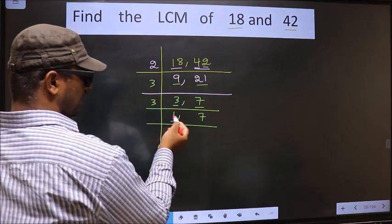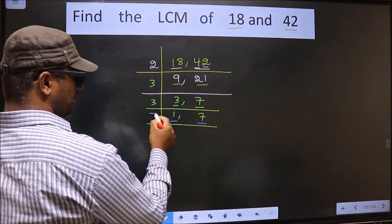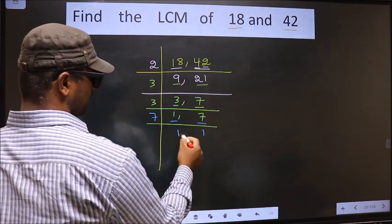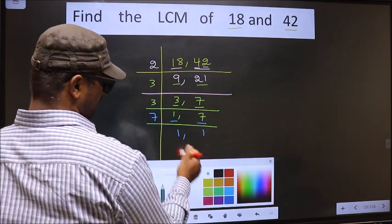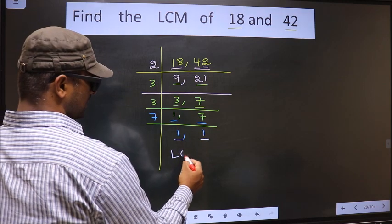We got 1 here. So focus on the other number that is 7. 7 is a prime number. So 7, 1 is 7. We got 1 in both the places. So our LCM is.